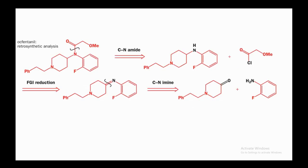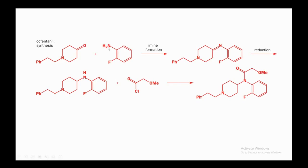Applying the concept: given a molecule with an amide functionality, disconnect the amide C–N bond to get a secondary amine and an acid chloride. The secondary amine is then converted via FGI reduction to an imine, and disconnecting that bond gives a ketone and NH2. In the forward direction: the ketone reacts with NH2 to form the imine, which is reduced to the NH, and that NH reacts with the acid chloride to give the desired product.